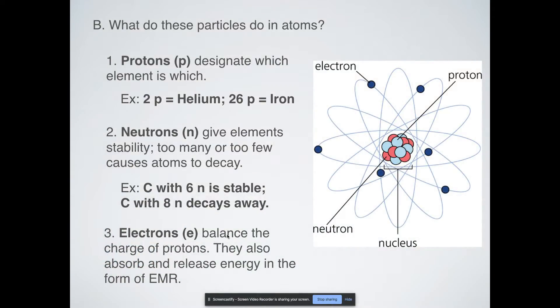Electrons. What do electrons do? Well they balance out the charge of the protons. In a neutral atom the number of positives and negatives should be the same because it's a neutral atom. They also absorb and release energy in the form of electromagnetic radiation which we've already talked about. So they are what give off certain colors of light when the atom is excited.